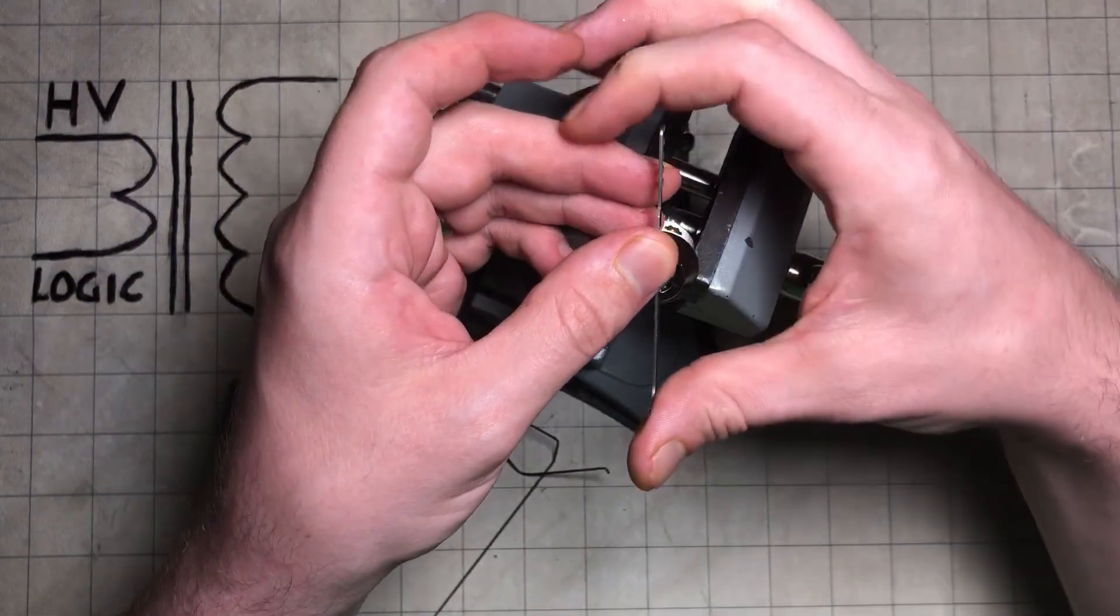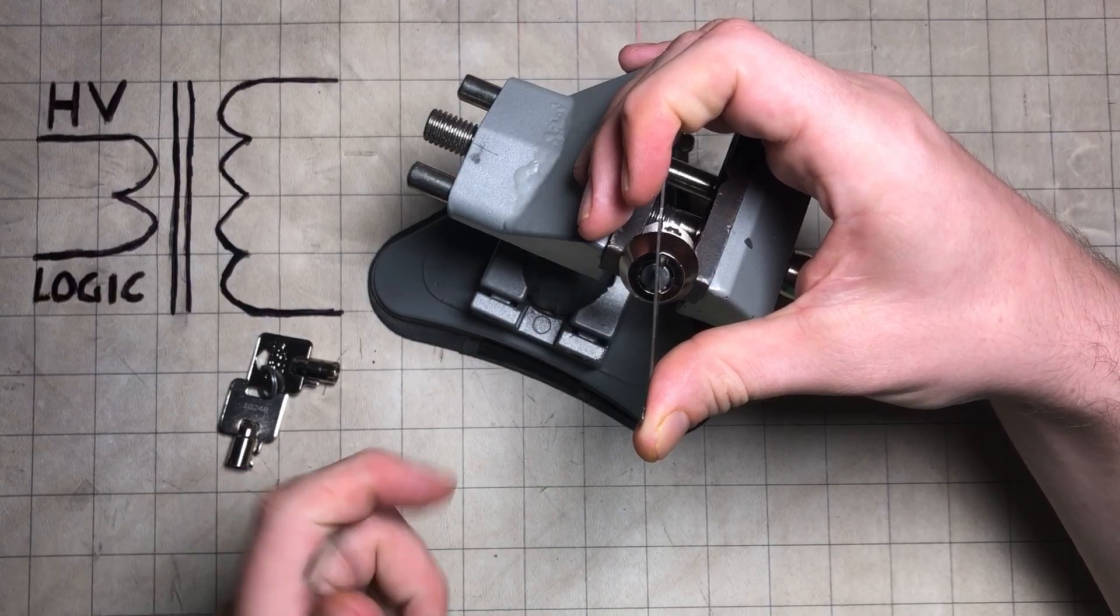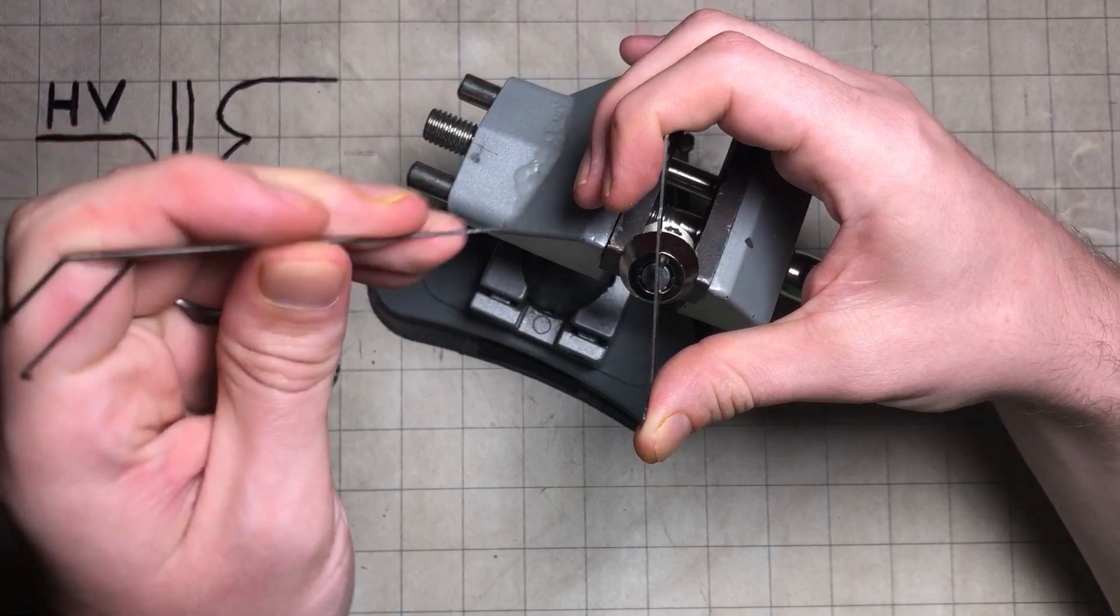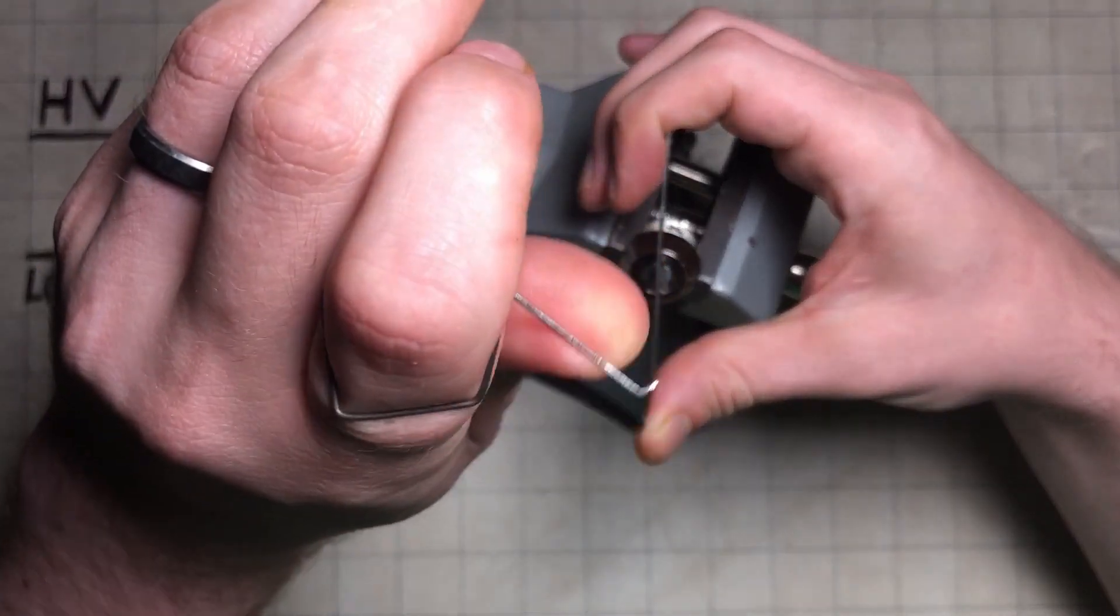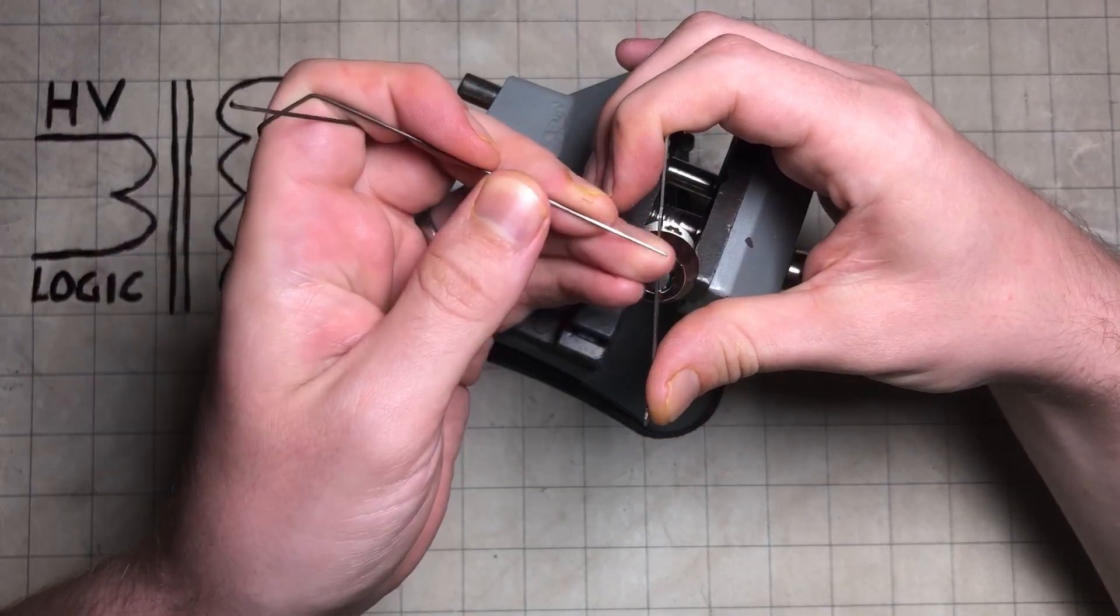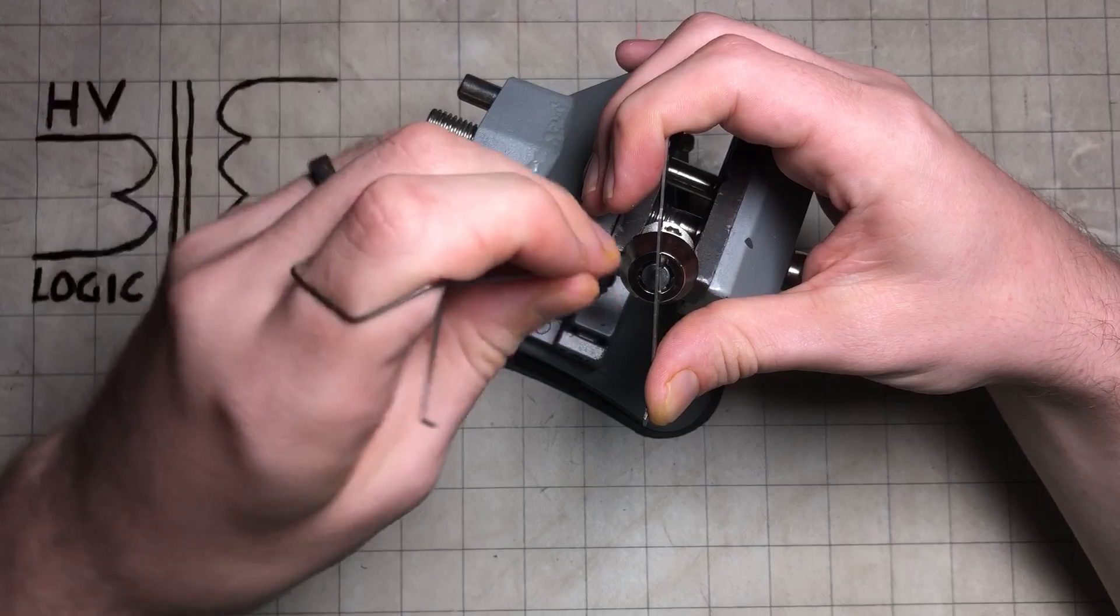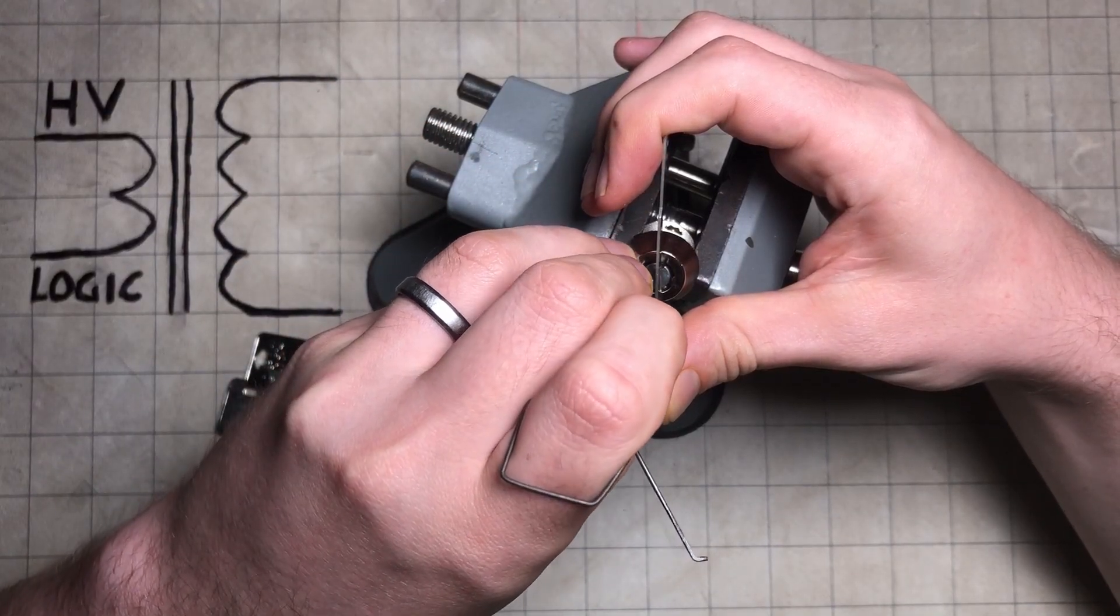All right, so we're going to pick this though. I'm going to use this Sparrows tubular one and I've got this, which is the back side of that pen cuff pick I made. So the other end I thinned down a little bit more. If you stick your finger through it, it's reasonably ergonomic. And we can get to picking.